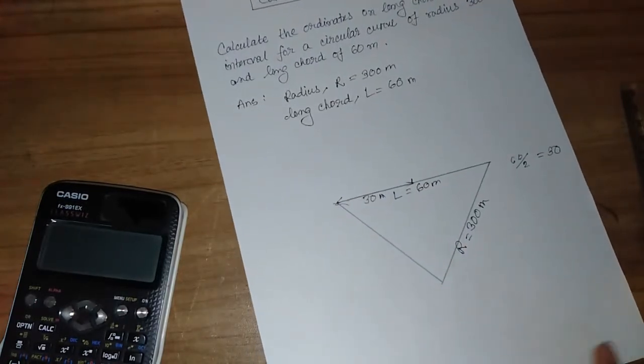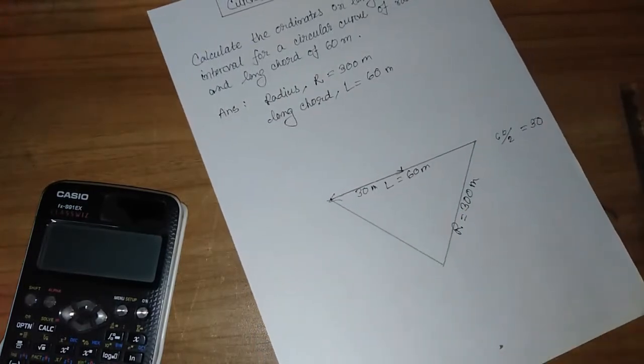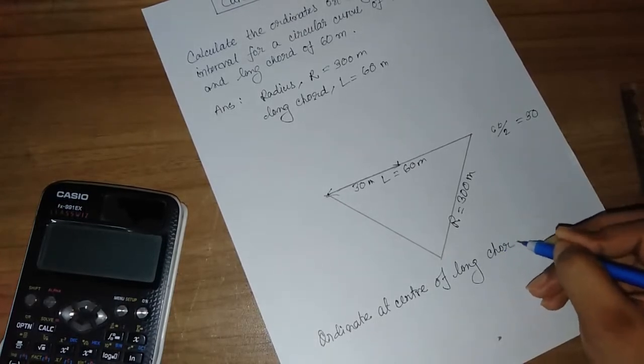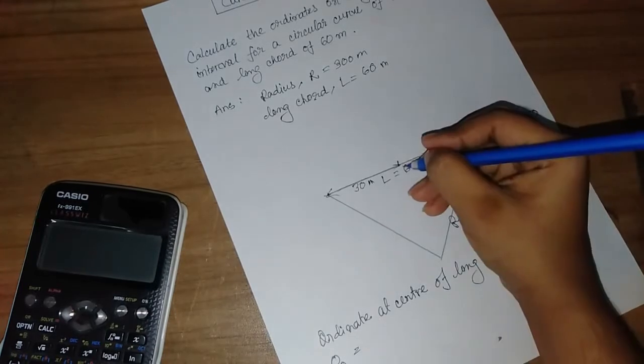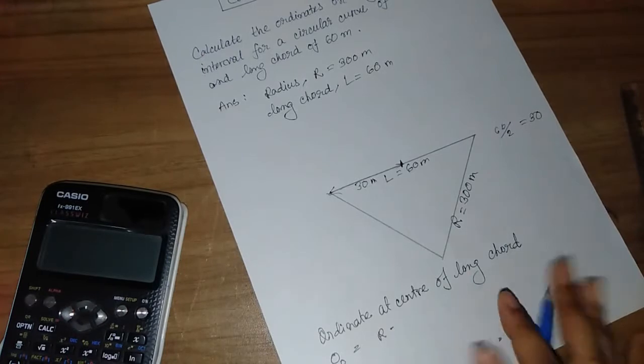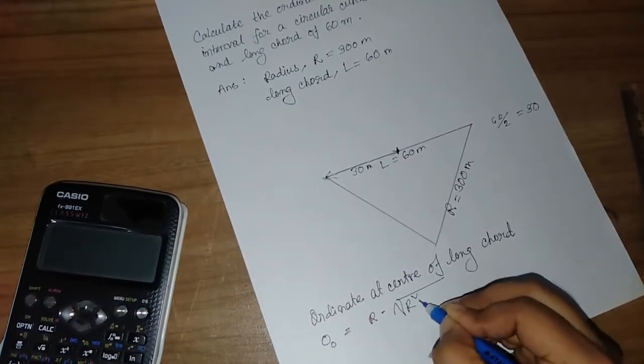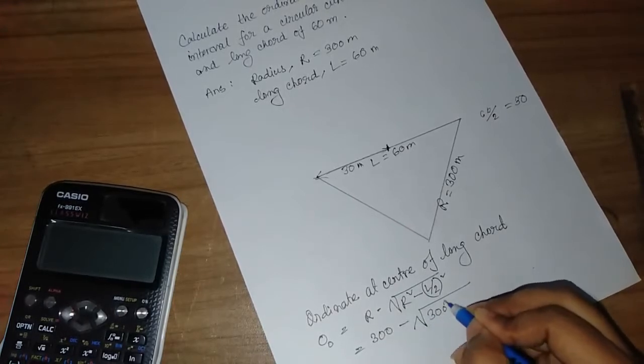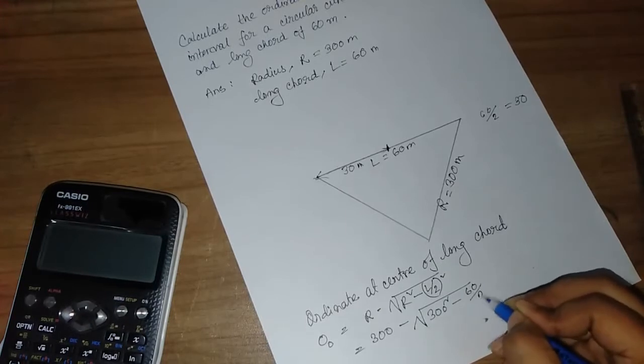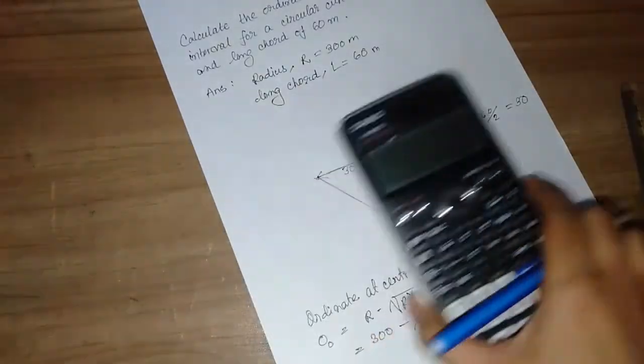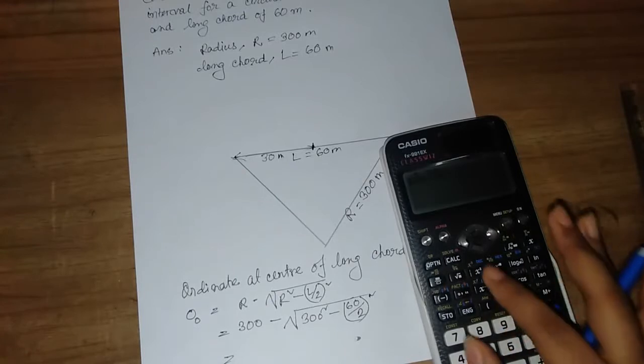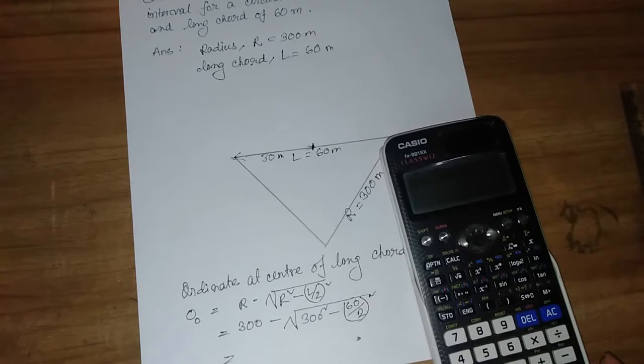First, we need to find the ordinate at center of long chord, O₀. The formula is: O = R minus square root of (R² minus (L/2)²). This equals 300 minus square root of (300² minus (60/2)²), which equals 300 minus square root of (300² minus 30²), equals 1.5 meter.